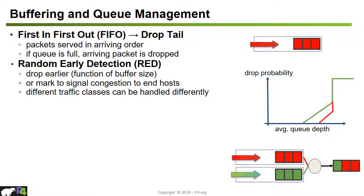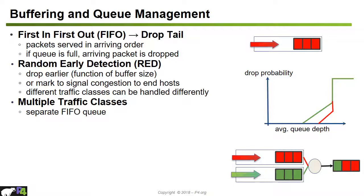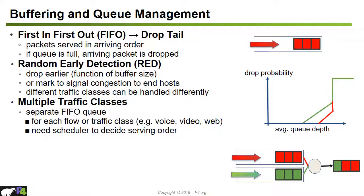Instead of dropping, we could mark or signal congestion to end hosts earlier by marking packets rather than dropping them — this will be seen later in an example using the P4 data plane programming language. In a normal switch with multiple service classes, we have multiple queues to segregate traffic. Voice flows have one queue, video flows have another, and web traffic has its own queue. When there are multiple queues, a scheduler is needed to decide the serving order.